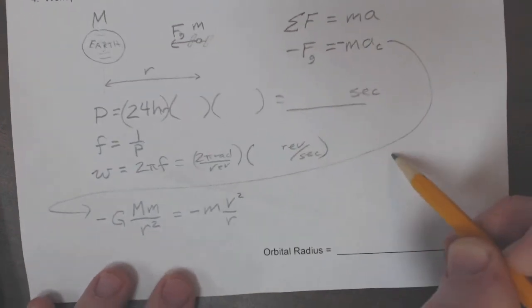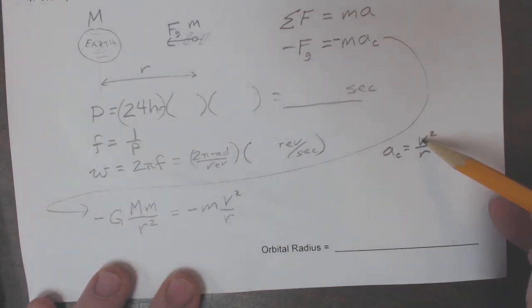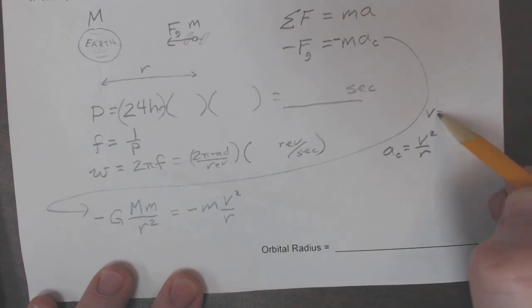But you know what, centripetal acceleration can be written as v squared over r. But because there's this connection between tangential velocity and angular velocity, you could write v equals ω times r, like that.